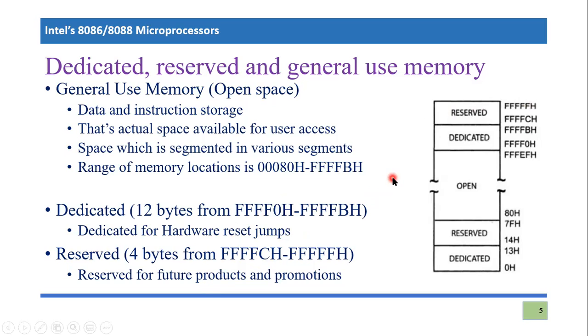So now in this topic, what we have learned, we have learned that in one megabyte of memory, we have again different classification. First 128 bytes are reserved for interrupt service routine. Out of those first 128, we have 20 bytes are used for internal service routines. And then 108 bytes are reserved for user defined. Then we have an open space, which is available for user or programmer in which we create segments. Then dedicated portion, it is used just for reset jumps. And we're going to see in coming lectures when we cover more advanced topics of 8086 and 8088 microprocessor. And then reserved portion, which is used for future products or any other amendment which is to be done. I hope you have understand the concept of this classification of memory available in 8086 or 8088. If you have any confusion, you please post them in a comment section. Thank you so much for listening.